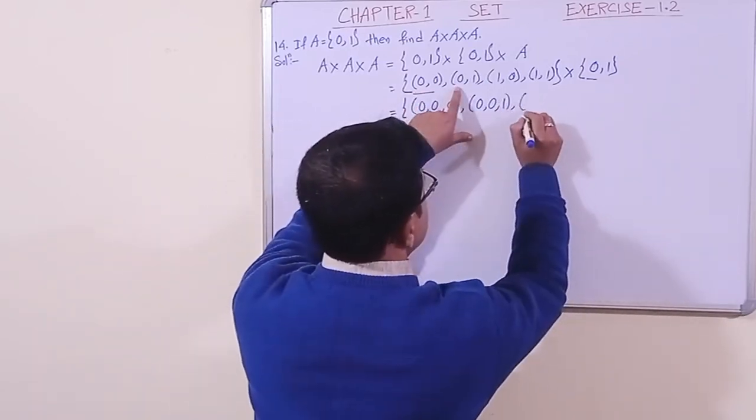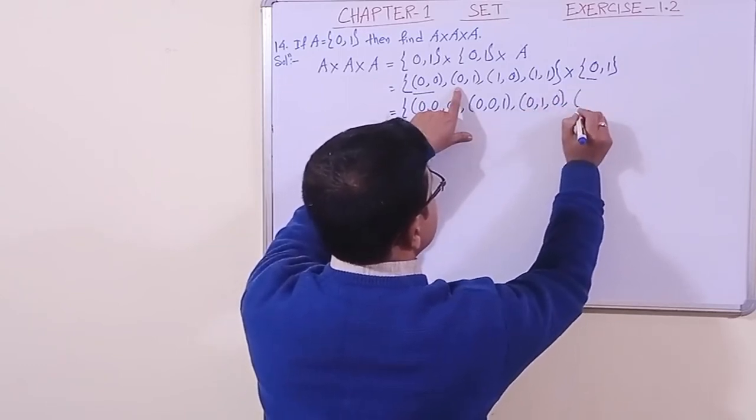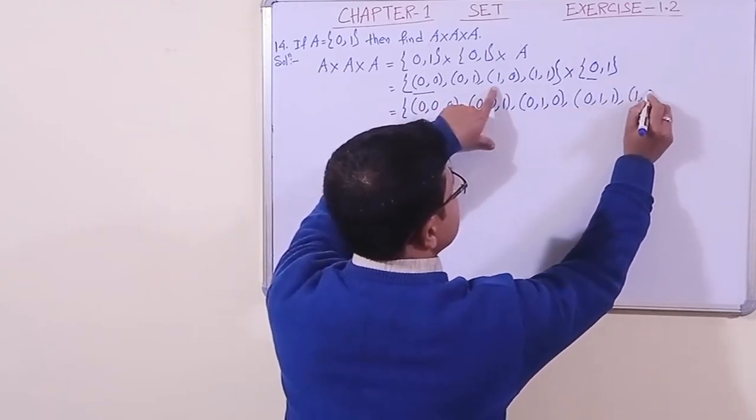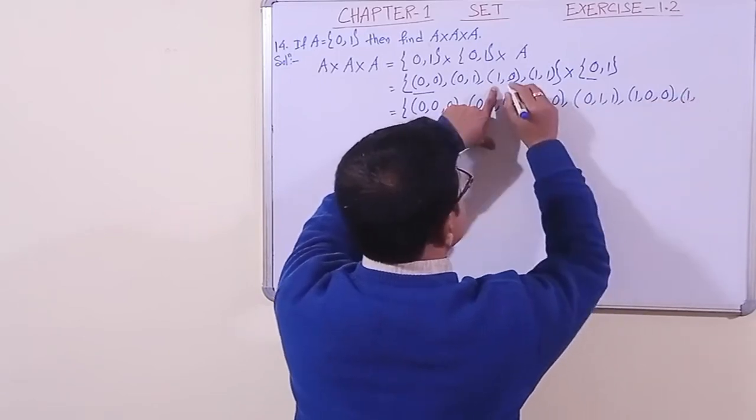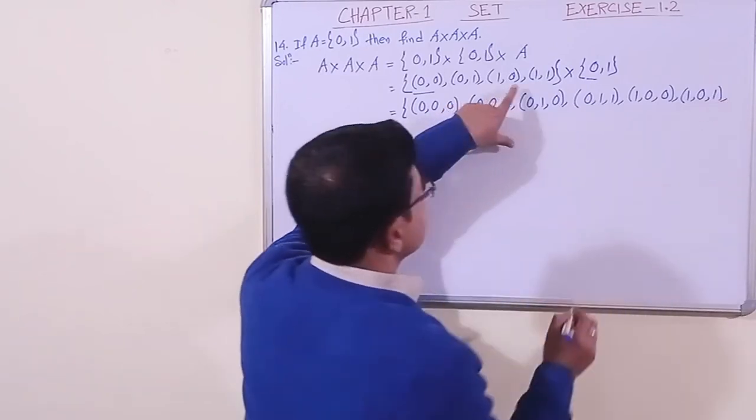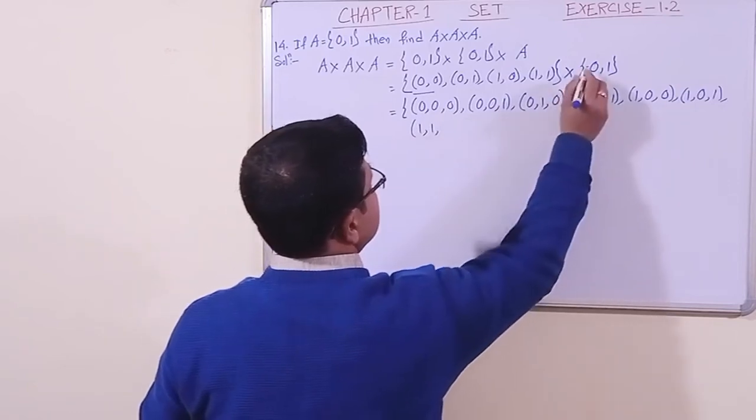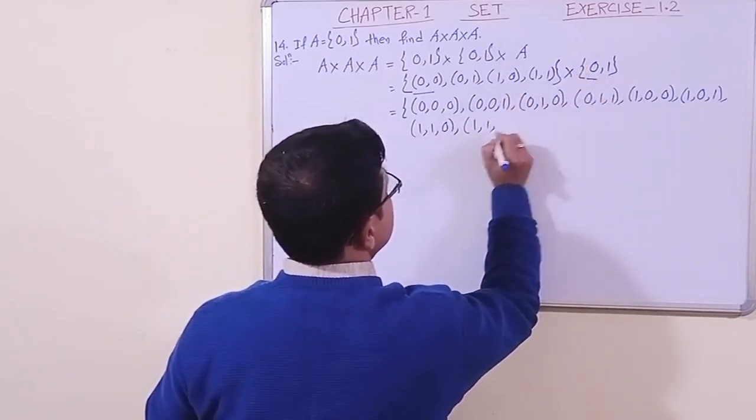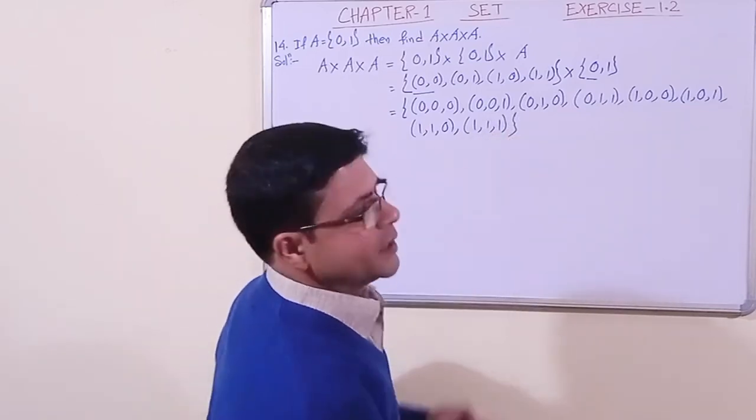Next with 1, 0: we get (1, 0, 0), then (1, 0, 1). With 1, 1: we get (1, 1, 0), then (1, 1, 1). This is the Cartesian triplet.